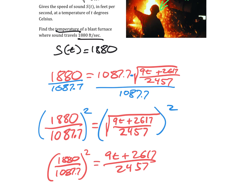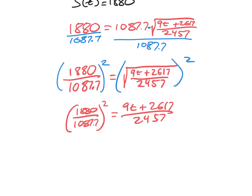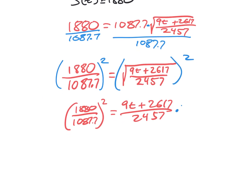We're still working our way down to t. Let's get that denominator out by multiplying both sides by 2457. Those cancel, and we've got 2457 times (1880 over 1087.7) squared equals 9t plus 2617.